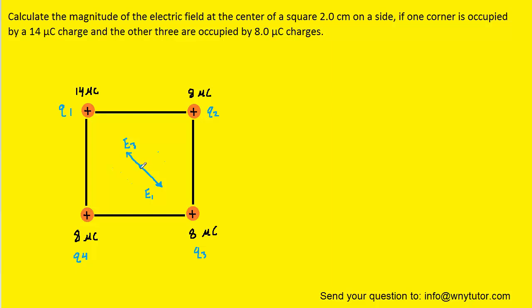E1 and E3 will not cancel each other out. The reason is that charge Q1, which produces E1, has a greater magnitude than charge Q3. That means the electric field produced by charge 1 will have a larger magnitude than that produced by charge 3, so these two vectors will not cancel — the E1 vector is larger than the E3 vector.